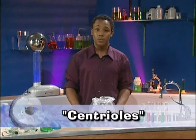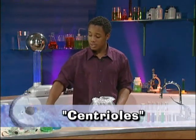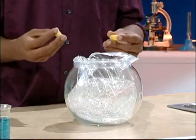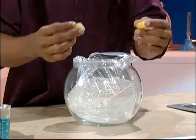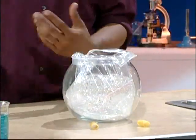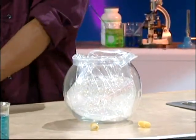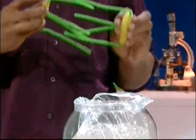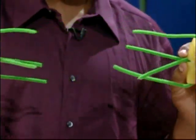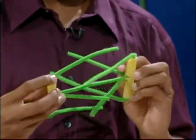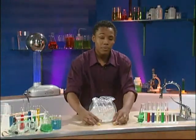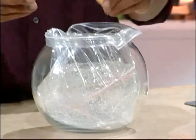For the centrioles, I'm going to use these noodles. They work during cell division — what happens is the centrioles replicate, or copy themselves, and create spindles that pull the cell apart. I'm going to place the centrioles perpendicular to each other near the nucleus.